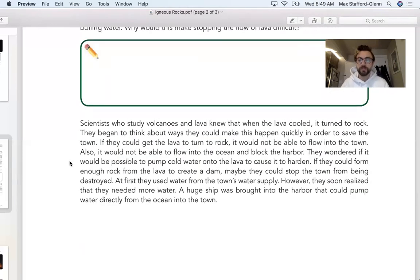Scientists who study volcanoes and lava knew that when the lava cooled, it turned to rock - igneous rock. Lava, molten, melting, cooled down, igneous rock. They began to think about ways they could make this happen quickly in order to save the town. If they could get the lava to turn to rock, it would not be able to flow into the town. Also, it would not be able to flow into the ocean and block the harbor.